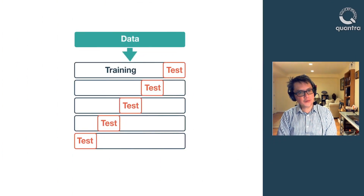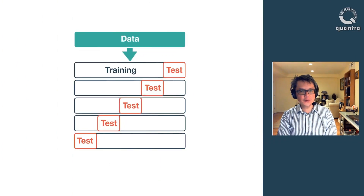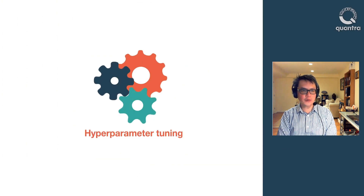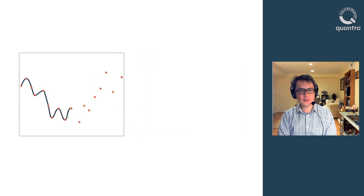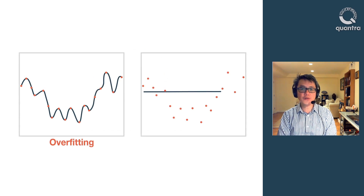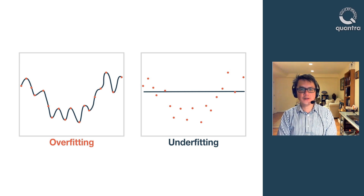Some of the concepts covered in this course, such as cross-validation techniques and hyper-parameter tuning, are common to all AI models. In addition to machine learning models, you can be creative and apply some of the techniques to avoid overfitting or underfitting in other quantitative models. My studies of these topics have certainly improved my own money management skills, and I hope the same for you.